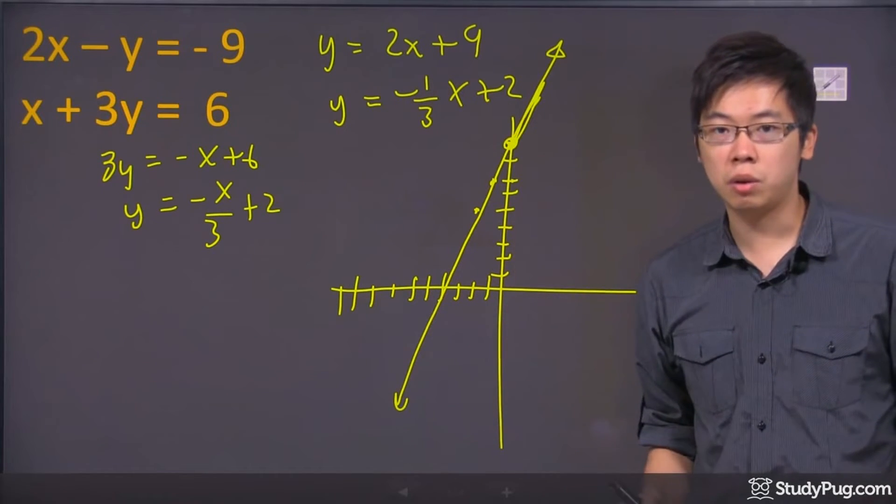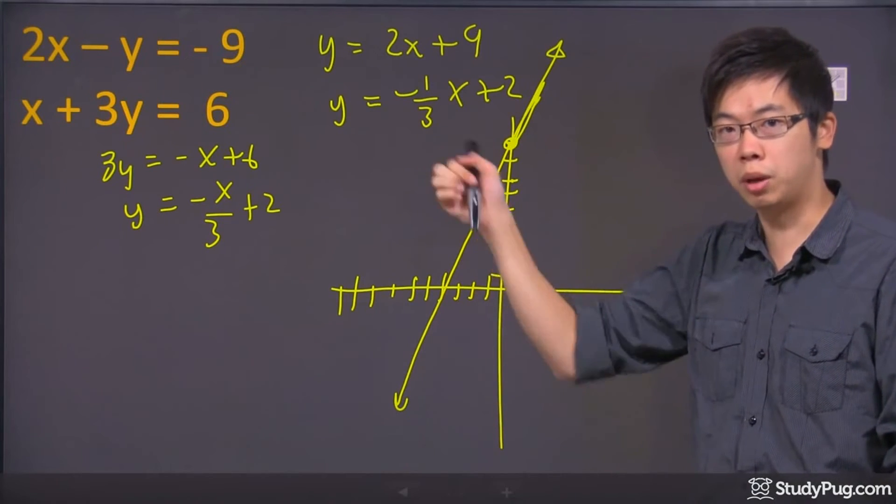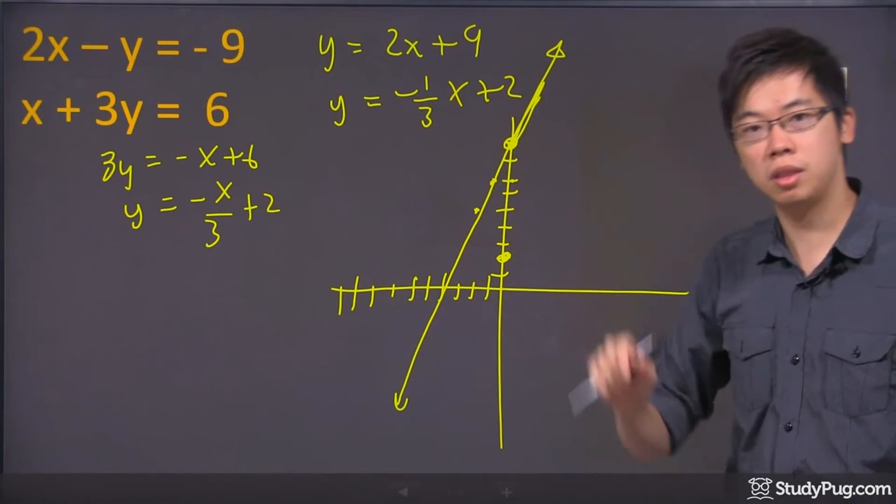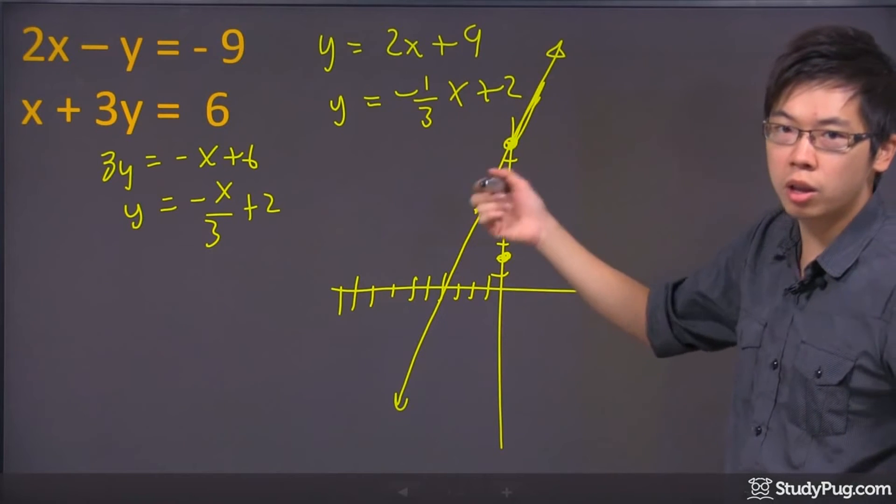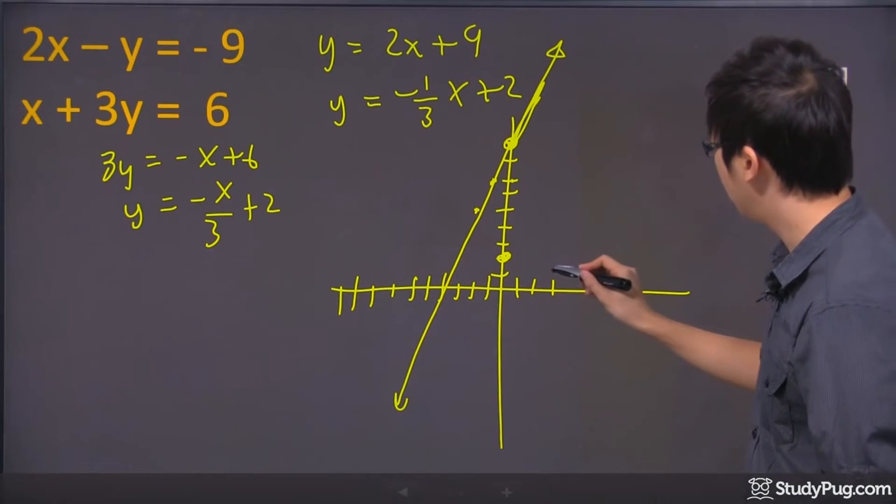Now for the second equation, the y-intercept is at y = 2. The slope goes this direction because it's negative. So you go down 1 and over 3: 1, 2, 3, you're somewhere here.